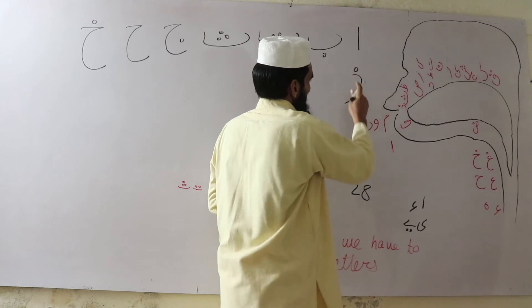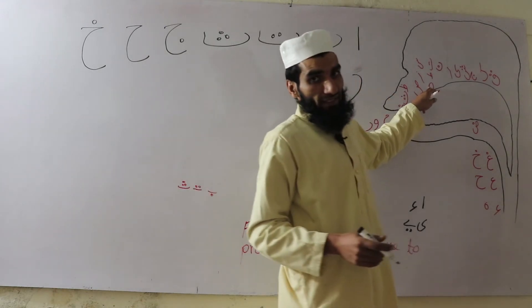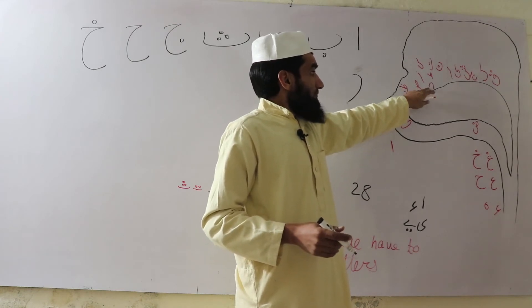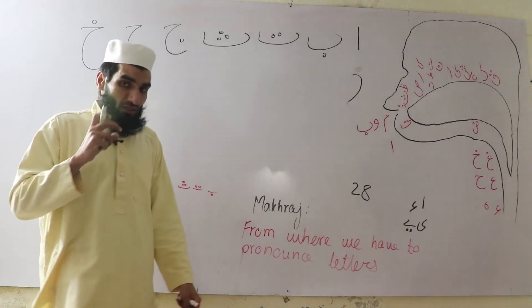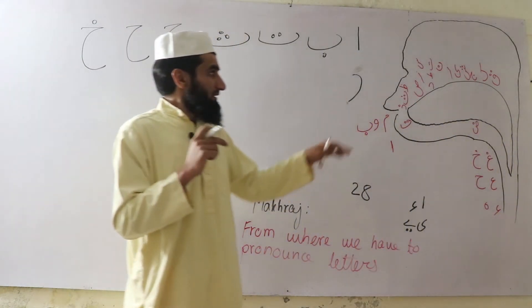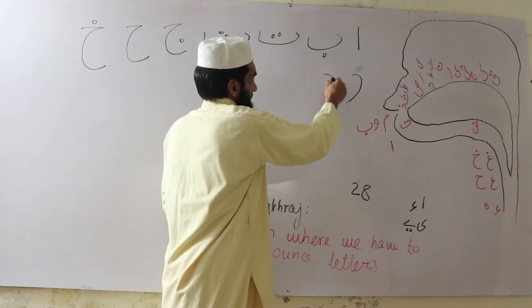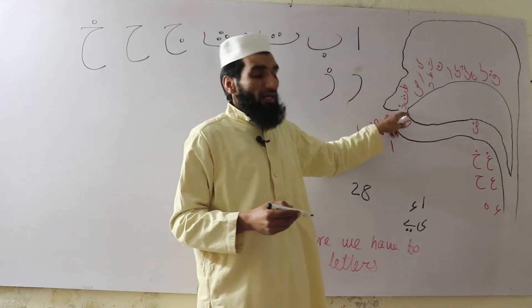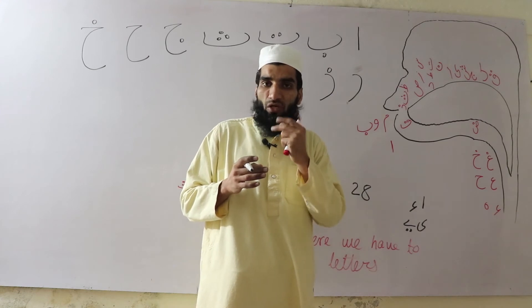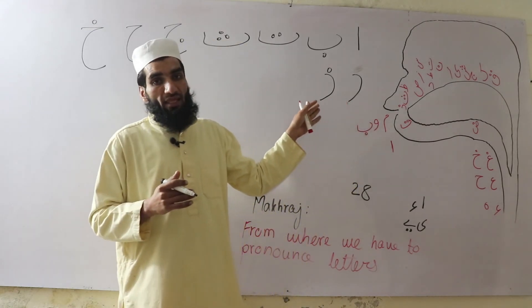Next is Dal. Dal is empty from any dot. Its Makharaj is similar to Ta — the front corner of the tongue touches the upper root of the front upper teeth: Dal. Dhal is like Dal but the tongue is placed between the two jaws — very softly: Dhal. Dhal has one dot upside.